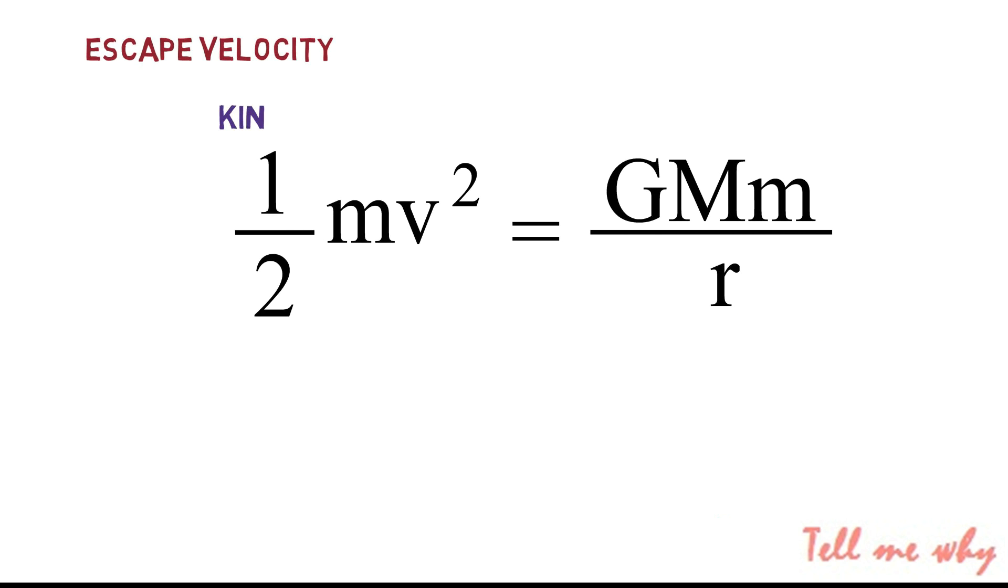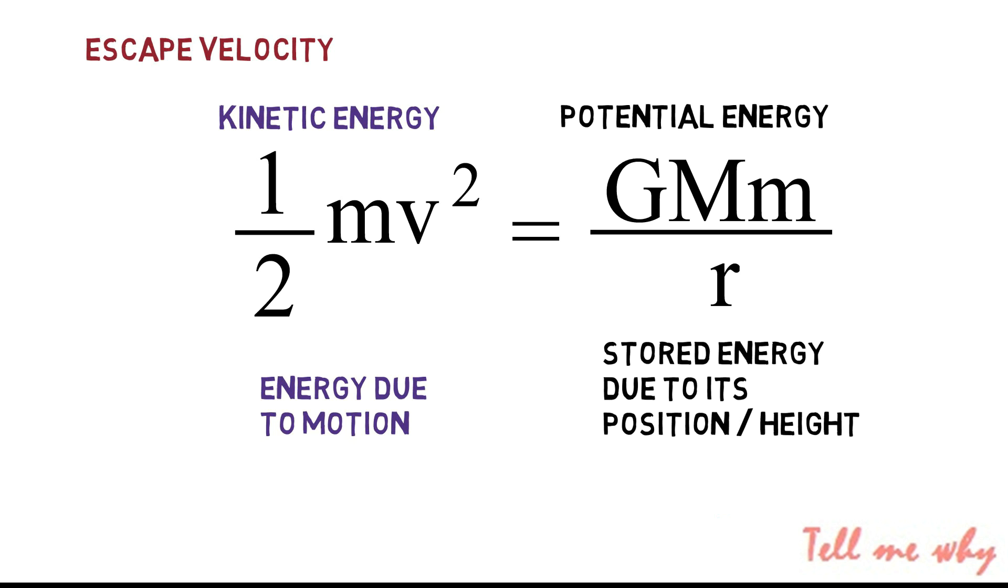The escape velocity is the velocity at which the spacecraft's kinetic energy is equal to its gravitational potential energy. The left side is the kinetic energy. The kinetic energy is defined as the energy that a body possesses by virtue of being in motion. It is determined by the mass and the velocity of the object, in our case, New Horizons.